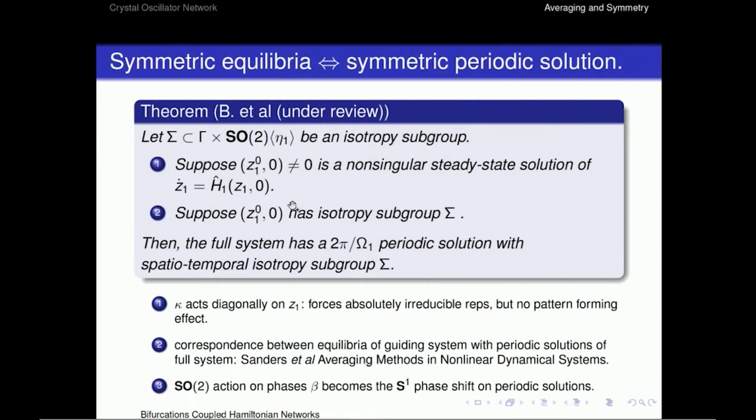So we have our first result, which says that if I take sigma, a symmetry, an isotropy subgroup of gamma cross SO2, and if I have a non-singular steady-state solution of just one of the decoupled equations, and that non-singular steady-state solution has isotropy sigma, then the full system has a periodic solution with 2 pi over omega 1 symmetry. And what happens is that we don't have to worry about the kappa because that acts diagonally, so the sigma is just important to look at subgroups of gamma cross SO2. And so what happens here is that the SO2 action on the phases becomes the S1 action on the periodic solution.